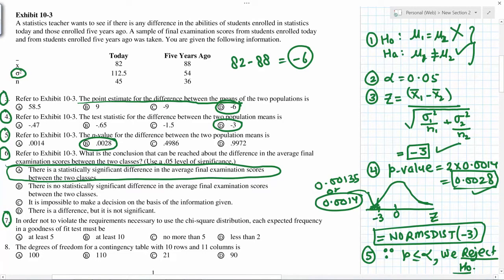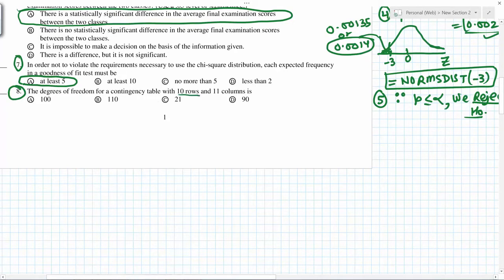In order not to violate requirements necessary to use chi-square distribution, each expected frequency in goodness of fit test must be at least five. Degrees of freedom for contingency table with ten rows and eleven columns: that will be 10 minus 1 times 11 minus 1, which is 90. So D is the correct answer.